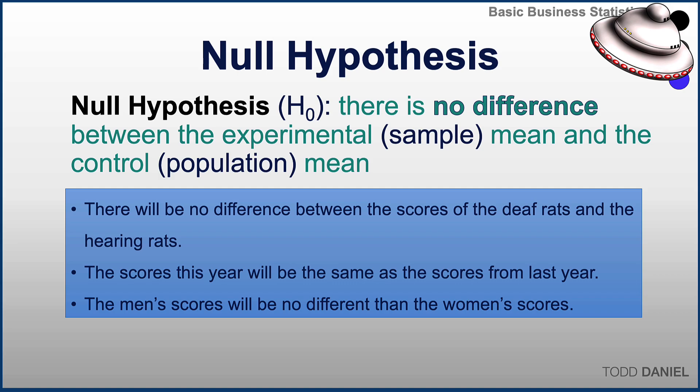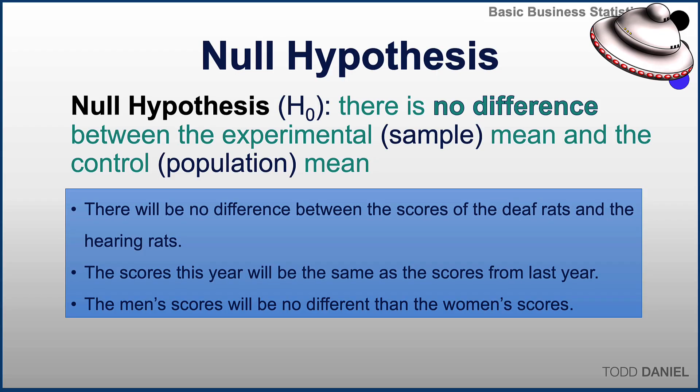There will be no difference between the scores of the deaf rats and the hearing rats — it's easy to spot, it says 'no difference' right there in the hypothesis. Scores this year will be the same as scores from last year; saying that two things are the same is saying that they are not different. The men's scores will be no different than the women's scores. In each of these examples, the hypothesis is clearly stating that there is no difference between the sample mean and the population mean.